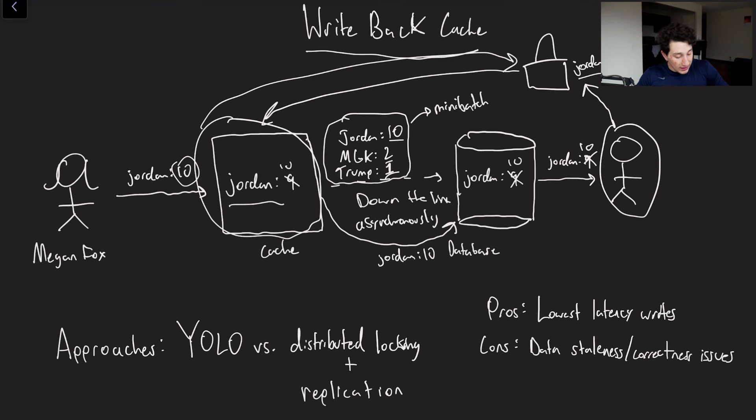Now, of course, that does ensure that this guy is going to see an up-to-date value, but it's possible that Megan Fox could write the value and no one else would ever see it. How? Well, if the cache just fails before it manages to write back to the database.